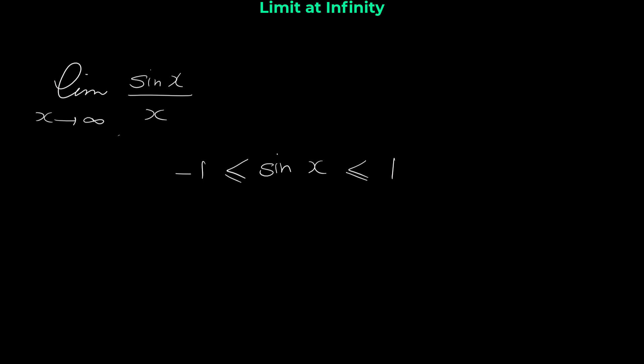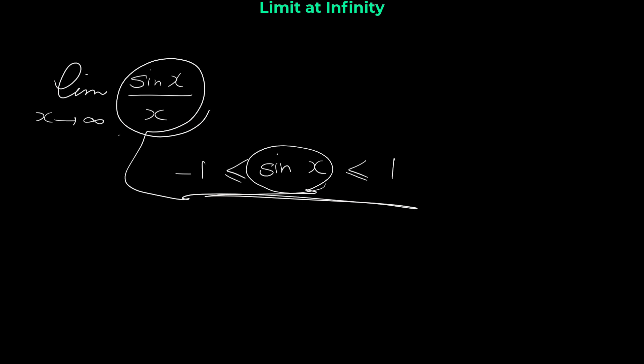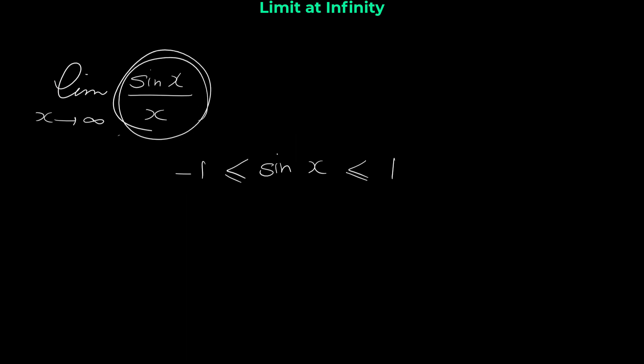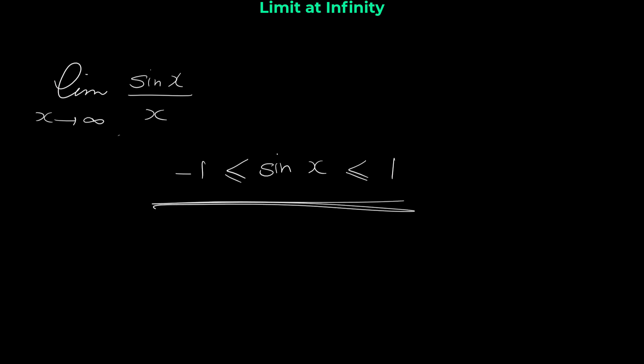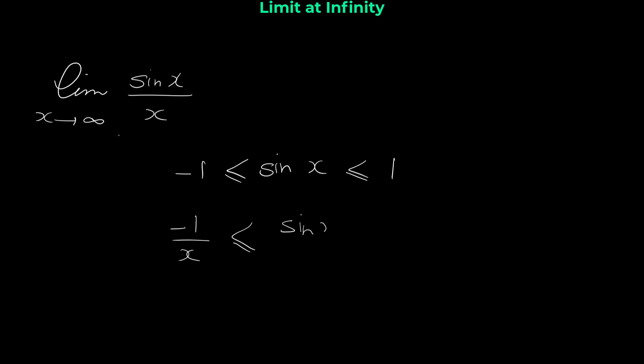Now with these inequalities we can use the squeeze theorem. We have sine x between negative one and one, but we want to find the limit of sine x over x. To convert, we divide both sides of the inequality by x, so the middle term becomes sine x over x. Dividing gives us negative one over x ≤ sine x over x ≤ one over x.